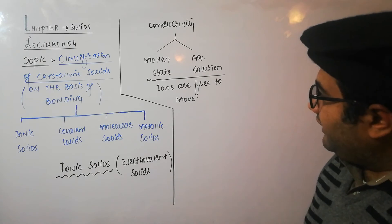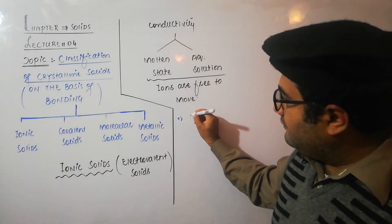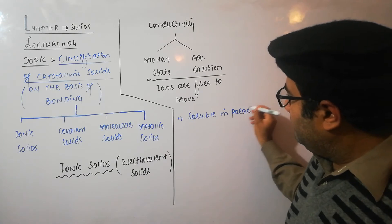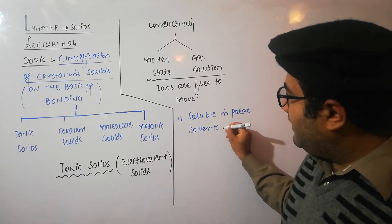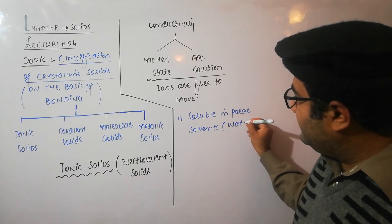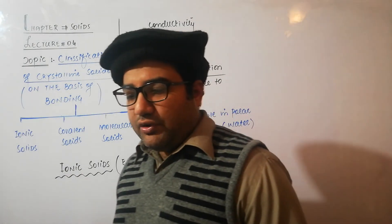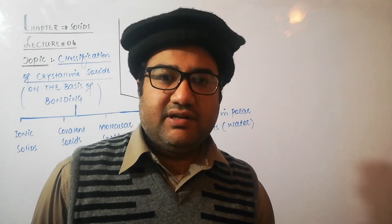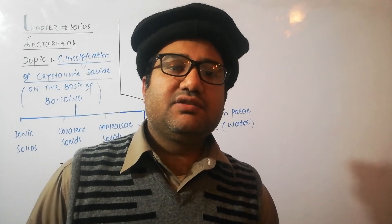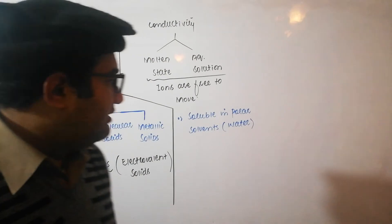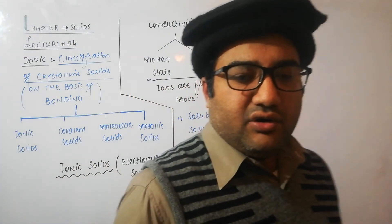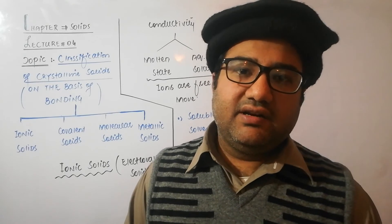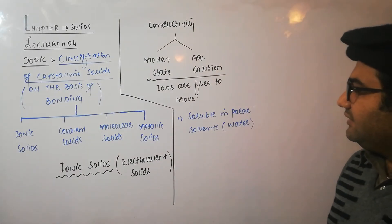Ionic solids are soluble in polar solvents, and the best solvent for all ionic solids is water. The molecules of polar solvents have enough energy to break the lattice of the ionic solid and then surround the ions — this is called solvation, and in the case of water, it is called hydration. Non-polar solvents do not have enough energy to break the ionic lattice, so ionic solids are insoluble in non-polar solvents but soluble in polar solvents.